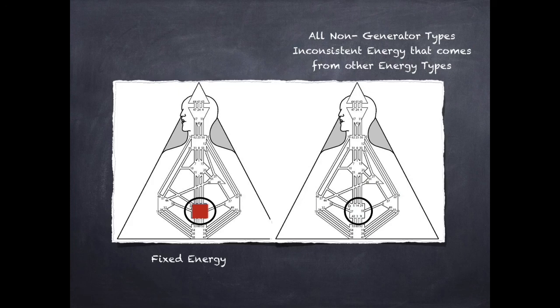To explain that, we need to talk about what defined and undefined means. I've already mentioned that if it is colored, a center is defined. And if it's white, it's undefined. But there's a bigger meaning than that. And that is that if something is undefined in the human design body graph, it means that the energy that comes into that center is inconsistent and also dependent on the energy of other people in their surroundings. But if the center is defined, it means the energy is much more fixed and is used in a more consistent way.